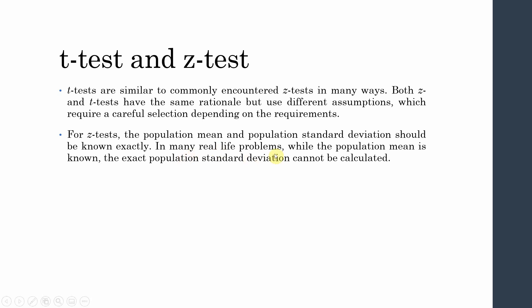In many real life problems, while the population mean may be known, the exact population standard deviation cannot be calculated. You cannot have the exact population standard deviation or mean because you cannot assess the whole population. You might have a standard value associated with the population, but the exact value is always difficult to obtain.